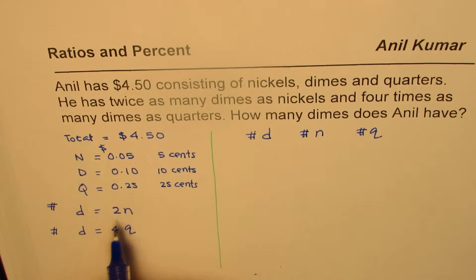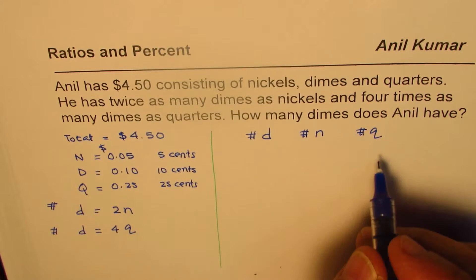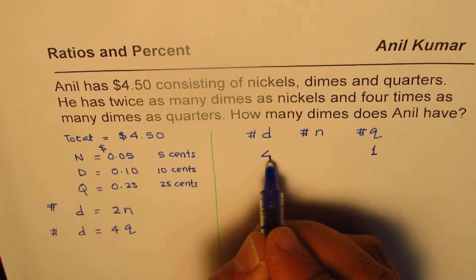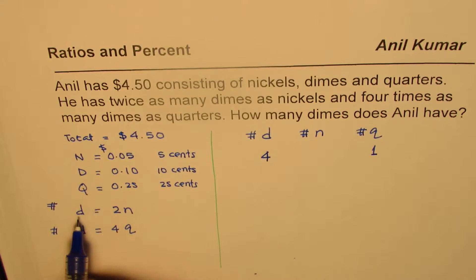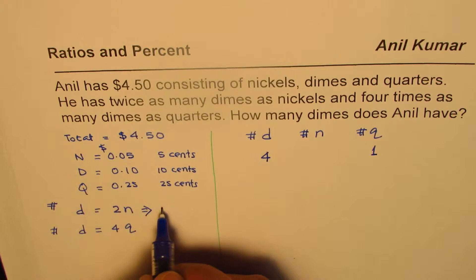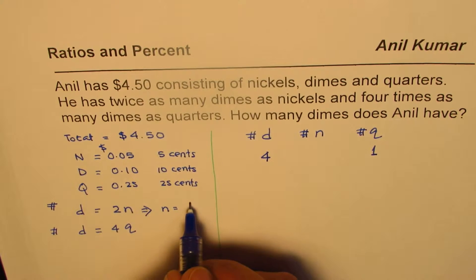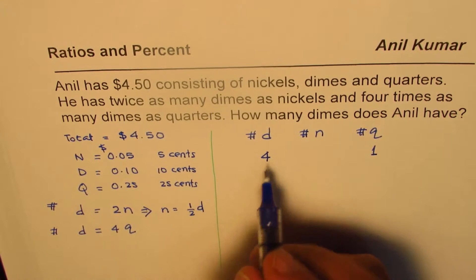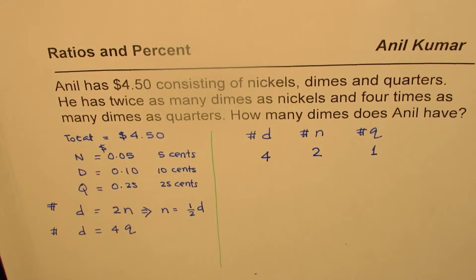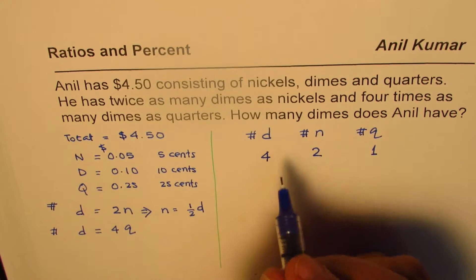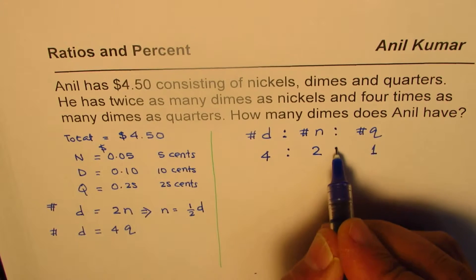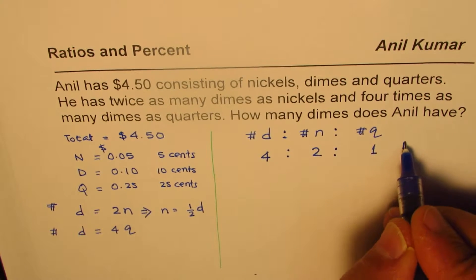And what we understand is that if we have one quarter here, if we have one quarter, then the number of dimes is 4. We also know that number of dimes is 2 times nickel. Or we could say that number of nickels is half of number of dimes. So half of 4 is 2. So we can now say that the ratio of dimes to nickels to quarters is 4 is to 2 is to 1. That's the ratio.